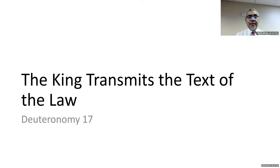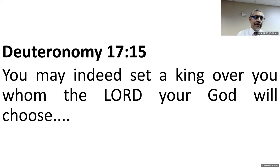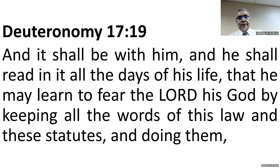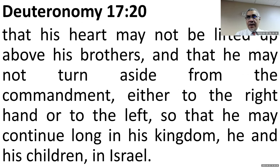We look at Deuteronomy 17, a text which predates the establishment of a king but anticipates it's coming. There are already rules in place for the king to follow. Deuteronomy 17 shows us that it is the king's job to transmit the text of the Bible. Verse 15: 'You may indeed set a king over you whom the Lord your God will choose.' Verse 18: 'When he sits on the throne of his kingdom, he shall write for himself in a book a copy of this law, approved by the Levitical priests. And it shall be with him, and he shall read in it all the days of his life, that he may learn to fear the Lord his God by keeping all the words of this law and these statutes, that his heart may not be lifted up above his brothers, that he may not turn aside from the commandment either to the right hand or to the left, so that he may continue long in his kingdom, he and his children in Israel.'